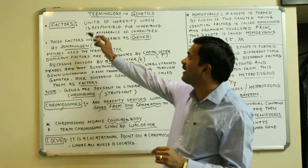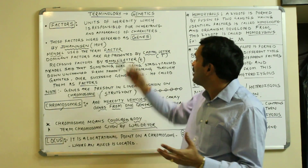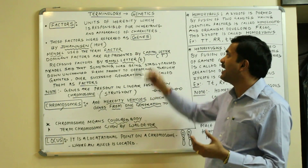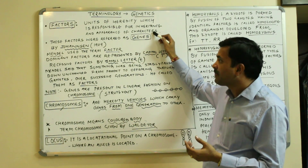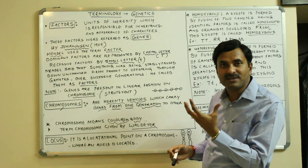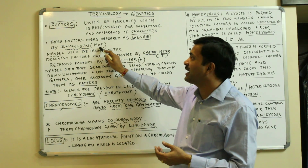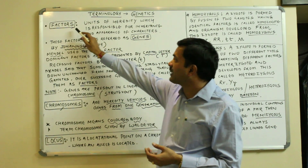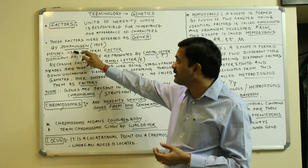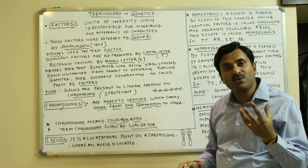The very first terminology is the factor. Factors are units of heredity which are responsible for the inheritance and the appearance of characters. These factors were referred to as genes by a scientist named Johannsen in the year 1909, but the word 'factor' was used by Mendel.